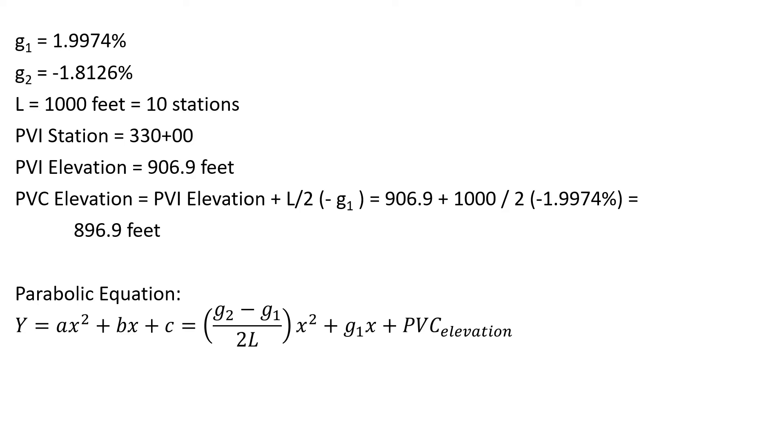Our generic parabolic equation is Y equals AX squared plus BX plus C. We're going to customize that for this particular curve. Y equals negative (1.8126 minus 1.9974) divided by (2 times 10) times X squared plus 1.9974 times X plus 896.9. This gives us a parabolic equation of Y equals negative 0.1905X squared plus 1.9974X plus 896.9.